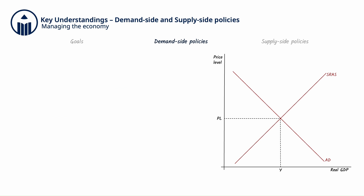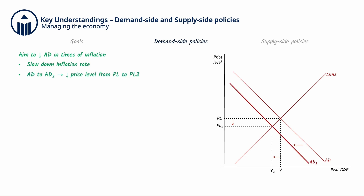Both fiscal and monetary policies also aim to decrease AD in times of inflation to help slow down the inflation rate. We call these contractionary policies. Contractionary demand-side policies will shift the AD curve to the left to AD2, leading to a lower price level from PL to PL2, but also lower output from Y to Y2, which can lead to a higher rate of unemployment. Contractionary fiscal policy involves increasing taxes and decreasing government expenditure (G).